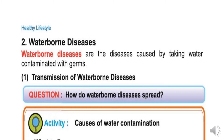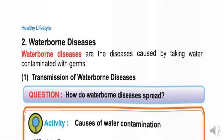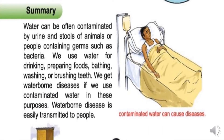Waterborne diseases are diseases caused by taking water contaminated with germs. Water can often be contaminated by the urine and stools of animals or people, containing germs such as bacteria. We use water for drinking, preparing foods, bathing, washing, or brushing teeth. We get waterborne diseases if we use contaminated water for these purposes. Waterborne disease is easily transmitted to people.